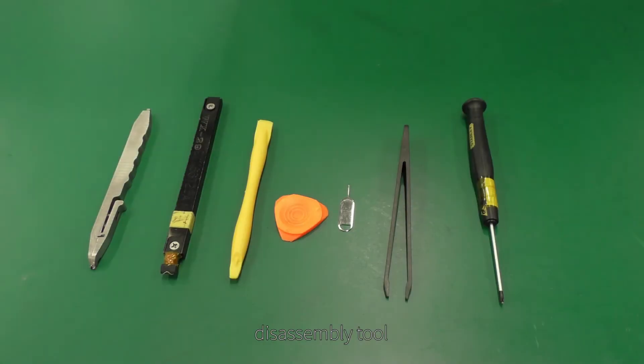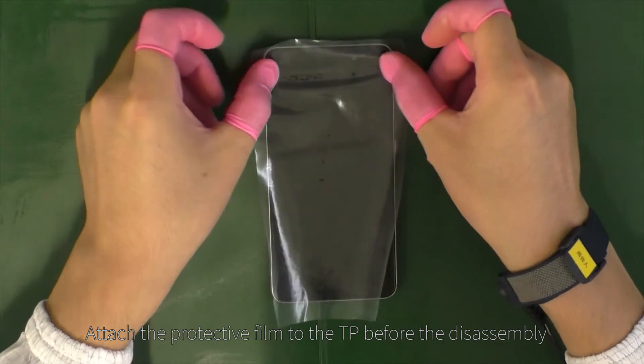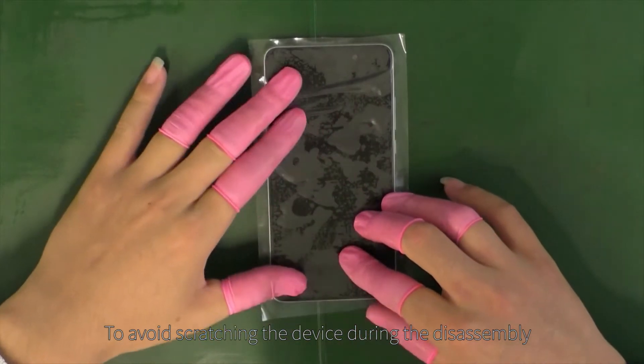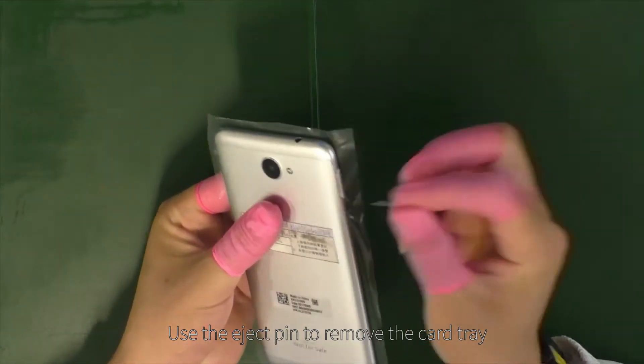Disassembly Tool. Attach the protective film to the TP before disassembly to avoid scratching the device. Use the eject pen to remove the card tray.